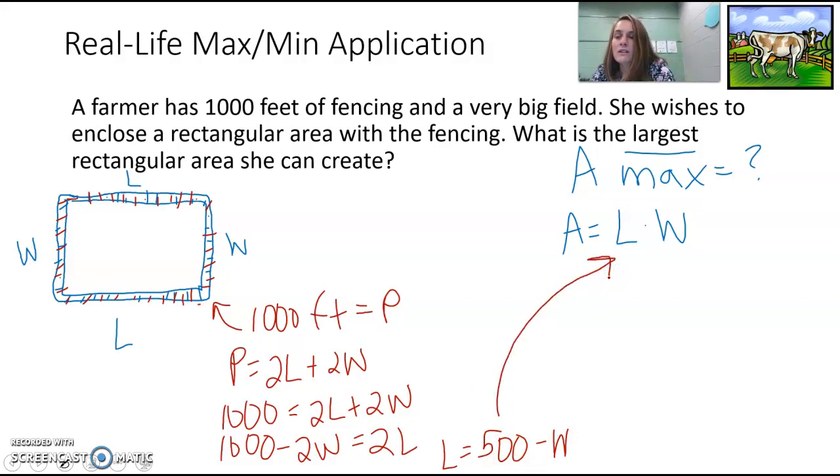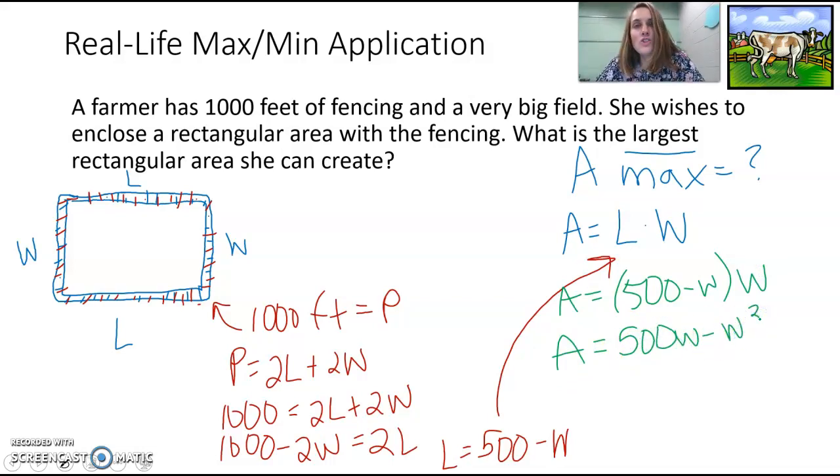And so now that then gets plugged into our equation. And so our area is equal to 500 minus w times w. Or if we distribute the w, we have 500w minus w squared. And so now it's a quadratic, right? It's using a and w instead of x and y, but that's okay.